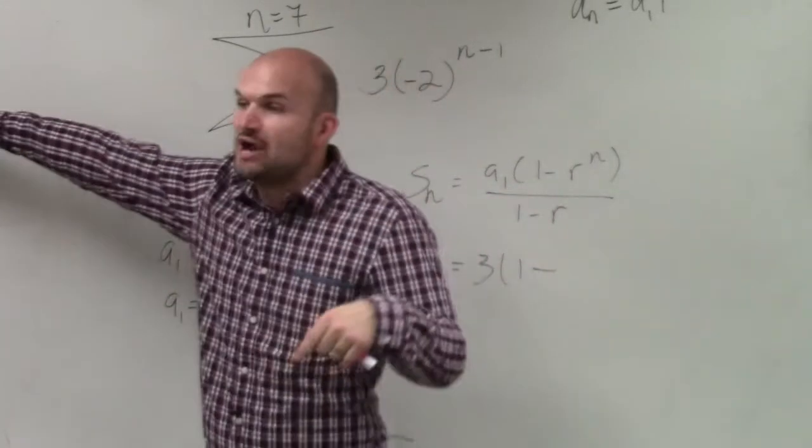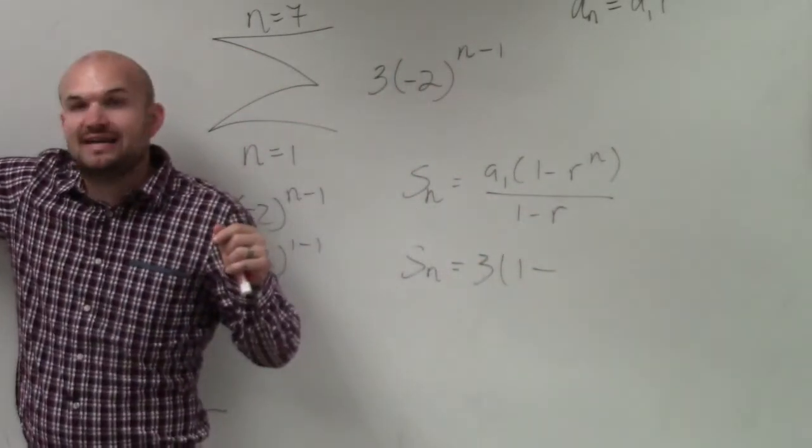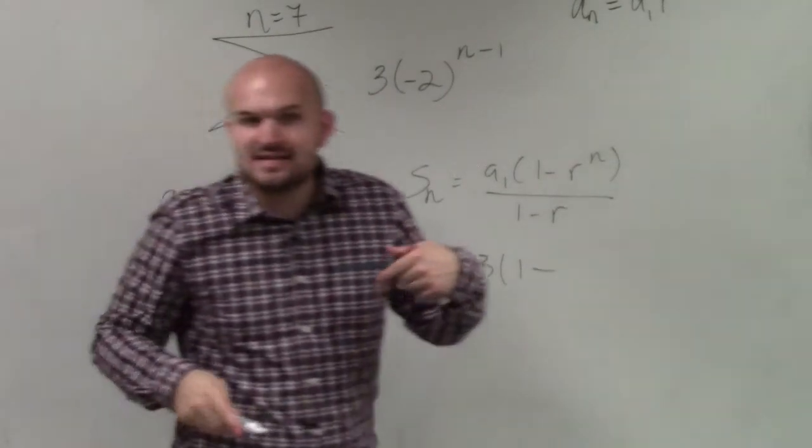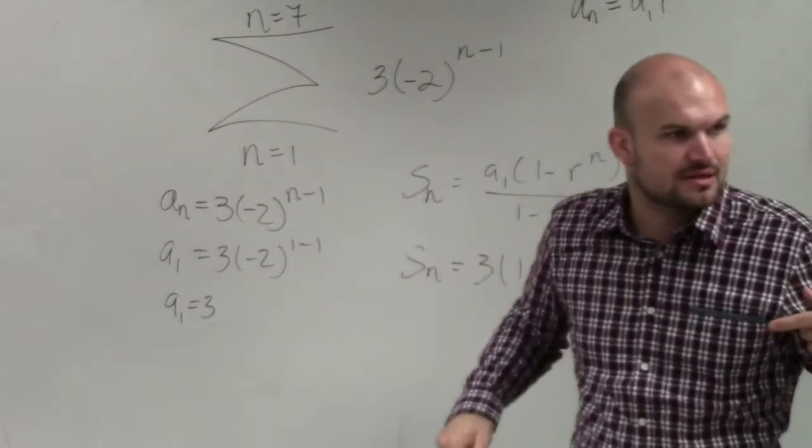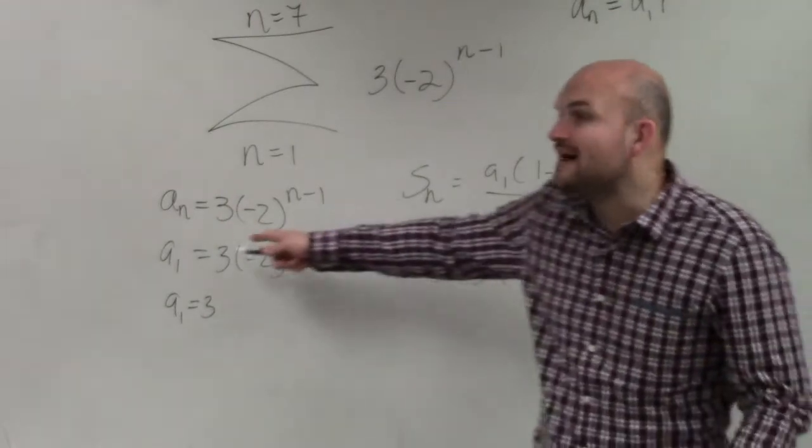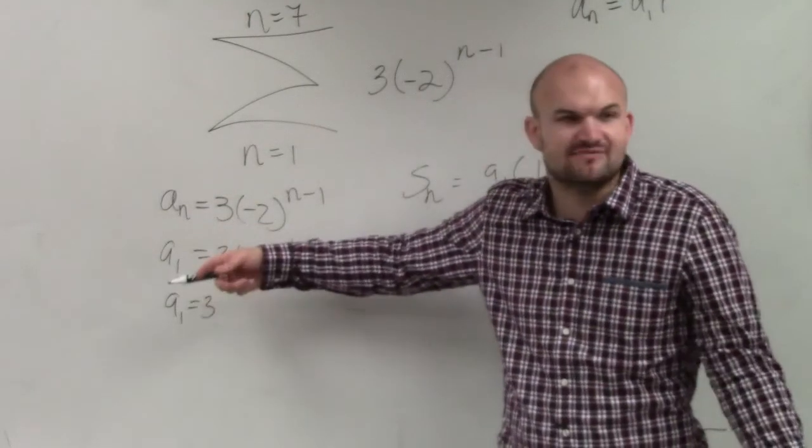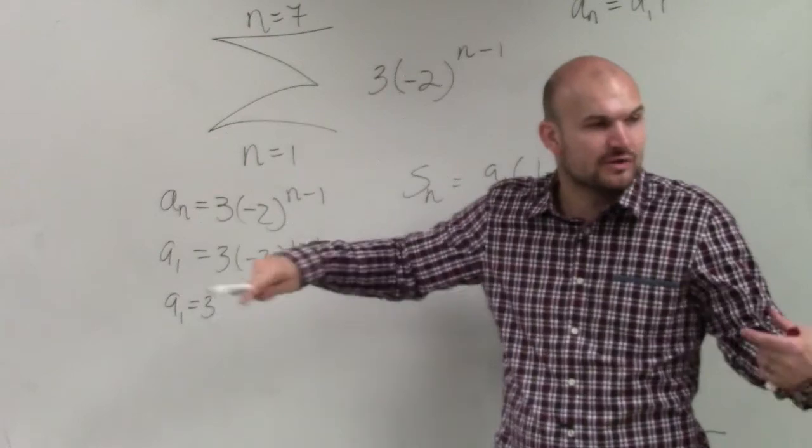Oh, I'm sorry, not subtracted. We divided, a sub 2 over a sub 1. In this case, we're not given the first five terms, are we? Now, you could find two terms and then divide them.